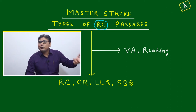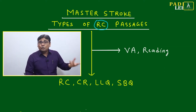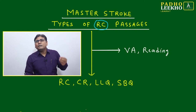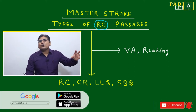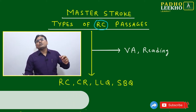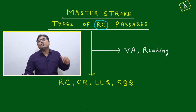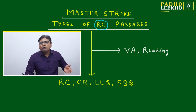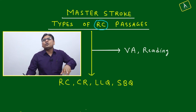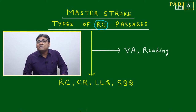Knowing about RC alone is not sufficient. If you know all categories of RC passages, how to tackle each type, and which types of questions are more likely in each — you will perform better. Just as I categorized DI into eight different types so that after reading one or two lines you can immediately identify the type and apply the right tools, similarly in RC once you categorize — historical, psychological, sociological, political — your approach becomes clear.